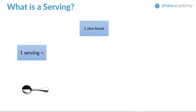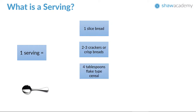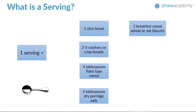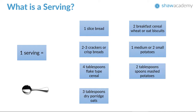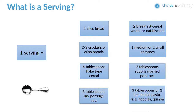Other examples of one serving include: two to three crackers or crispbreads; four tablespoons of flake-type cereal; three tablespoons of dry porridge oats; two breakfast cereal wheat or oat biscuits; one medium or two small potatoes; two tablespoons of mashed potatoes; or three tablespoons — about a half cup — of boiled pasta, rice, noodles, or quinoa.